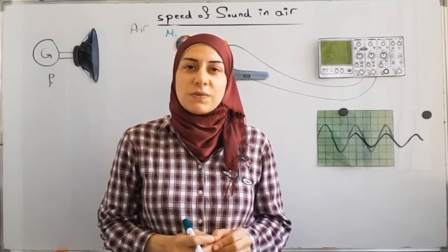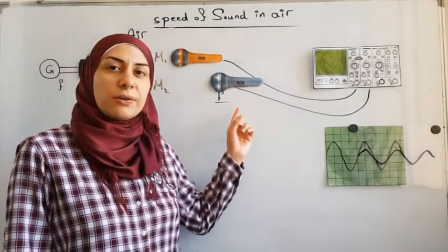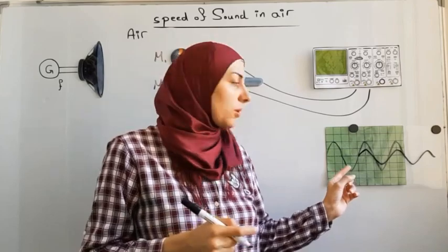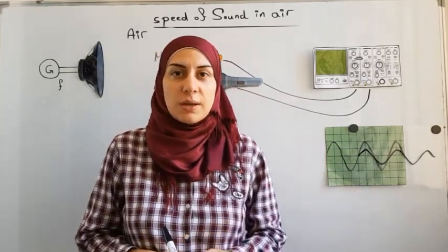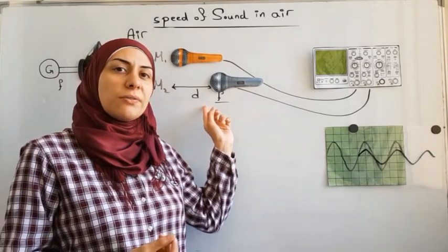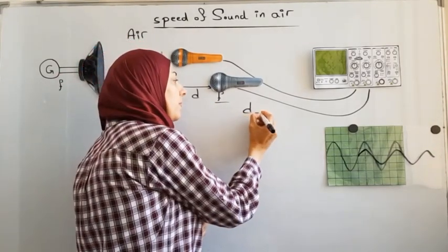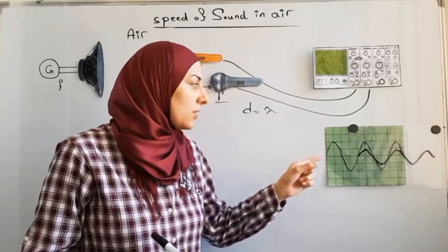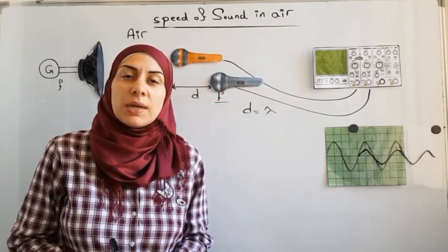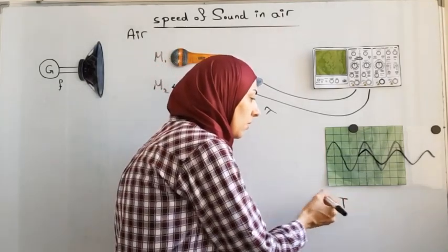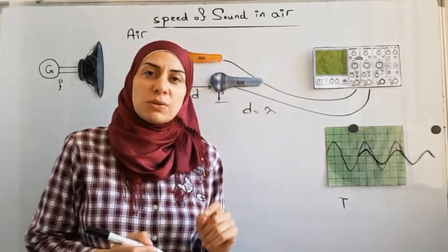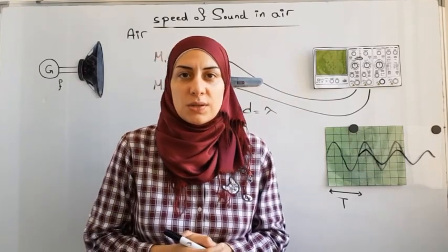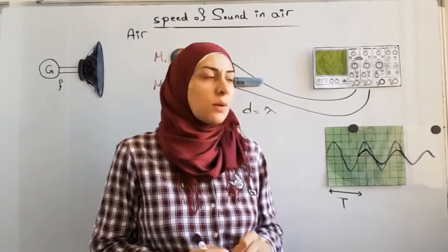But how can this help us find the speed of sound? As we move microphone M2 a distance D away from its initial position, the waveform has traveled one full cycle, because the two waves become in phase again for the first time. This means that the distance D that microphone M2 moved is equal to the wavelength lambda — where lambda is the distance traveled by the wave during one cycle. The oscilloscope doesn't give you the wavelength lambda directly; instead it gives you the period T, which is the time needed by the wave to cover one cycle. We can measure T using the oscilloscope.